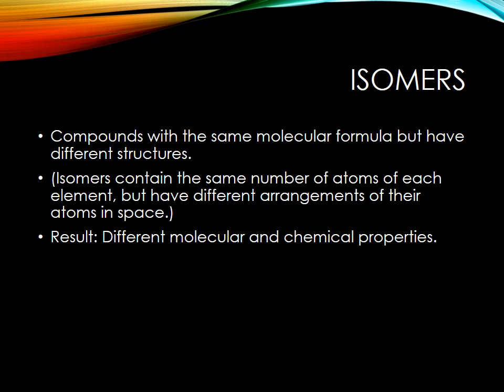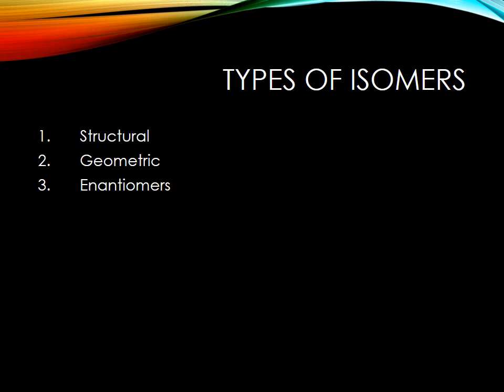The next thing we want to talk about are isomers. Isomers are compounds with the same formula but different structures. You need to be able to identify if something is an isomer or not. Remember, isomers contain the same number of atoms of each element, but they're arranged differently. There are three types of isomers: structural, geometric, and enantiomers.